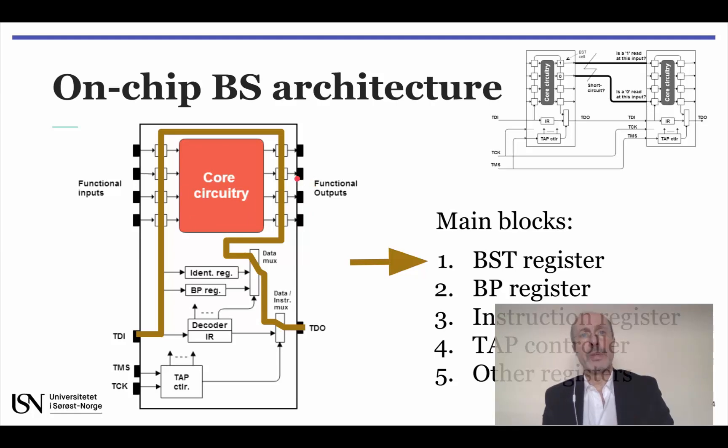The set of all boundary scan cells make up what is called the boundary scan register, which will be connected between TDI and TDO. When these two multiplexers, the data multiplexer and the data instruction multiplexer, are connected as shown in this slide.